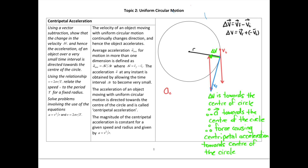Sometimes we put a little 'c' subscript to show it's centripetal: the centripetal acceleration a equals v squared over r. You don't have to put that 'c' there, but it helps to show you clearly understand that is the centripetal acceleration. This formula has velocity in it, so how do we work out the velocity for an object moving in a circular orbit? Well, we know that velocity is displacement over time — or distance over time, which is strictly speaking speed, but in this case we use them a little bit interchangeably.